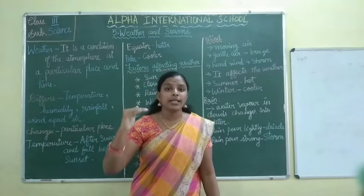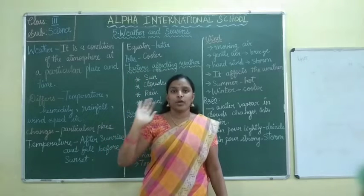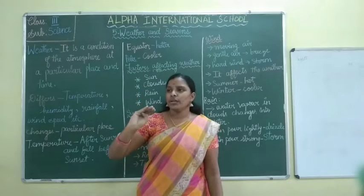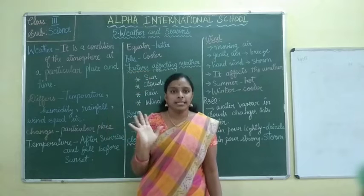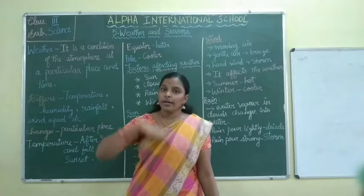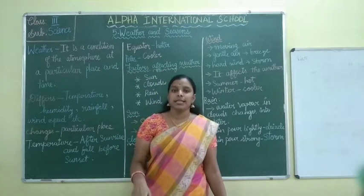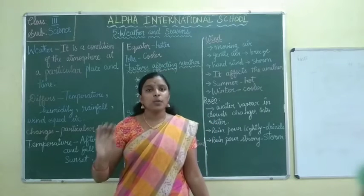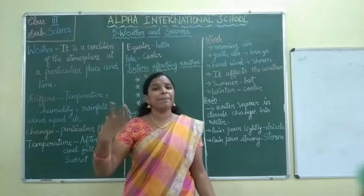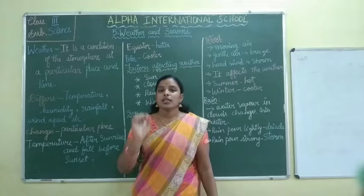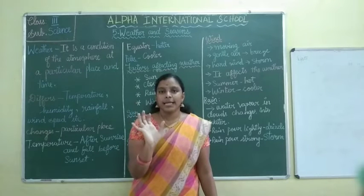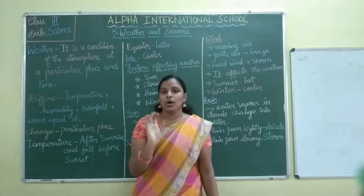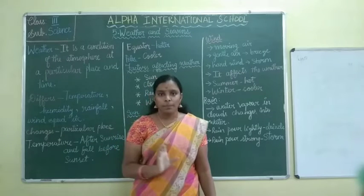They keep a meter — for example, if it is going to be 55 degrees it is sunny, if it is going below minus degrees it will be rain or winter. They will be predicting by keeping the measurement. By temperature only they can see the weather — how it will be and how it can be.